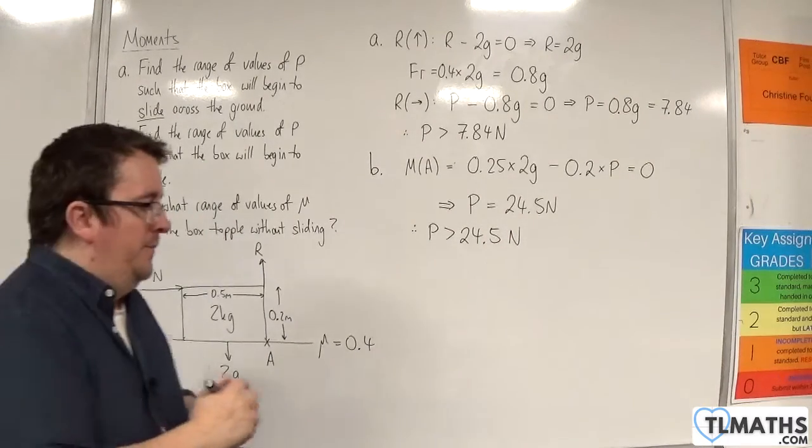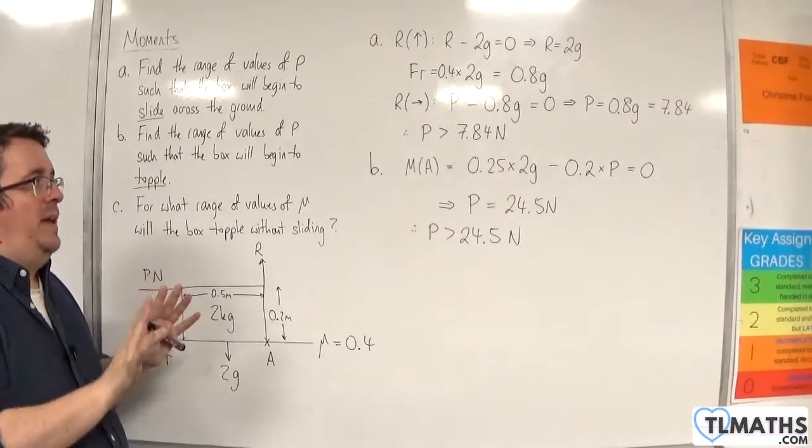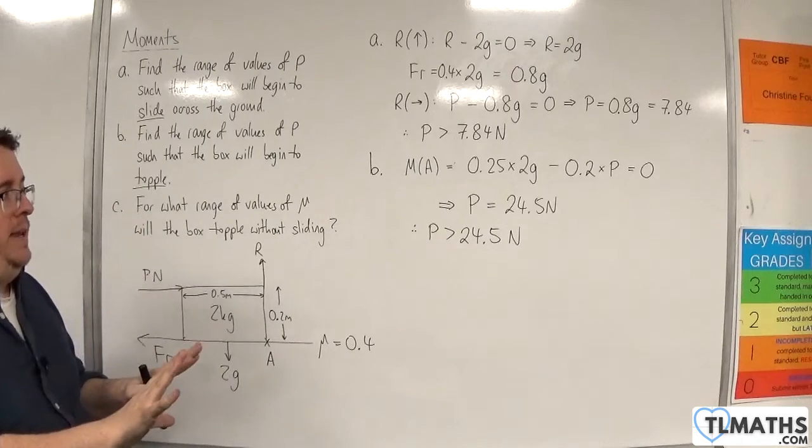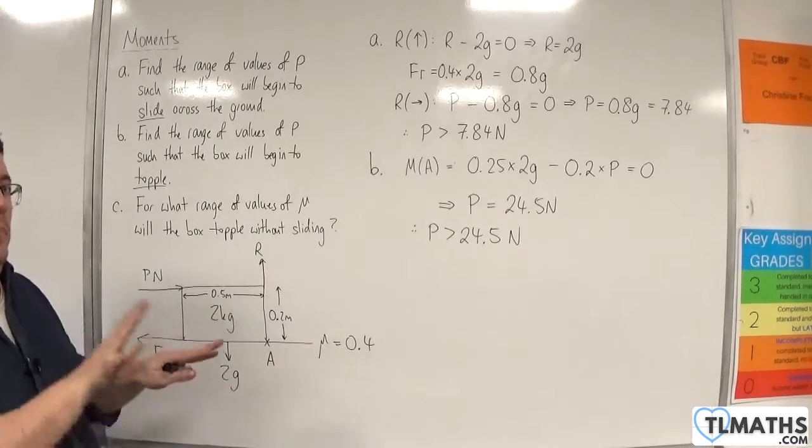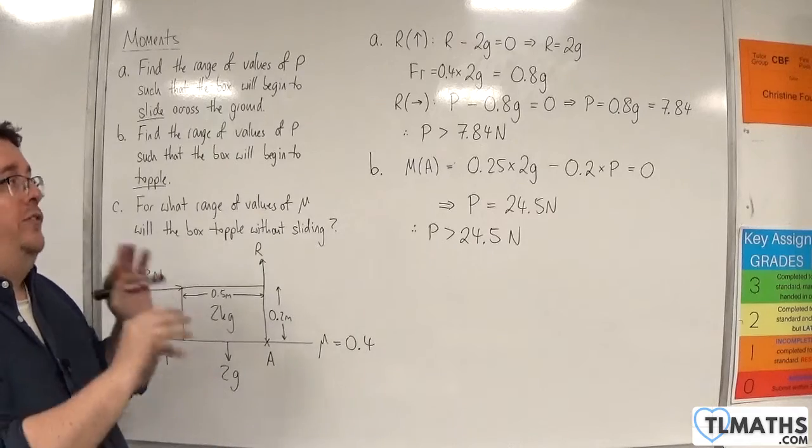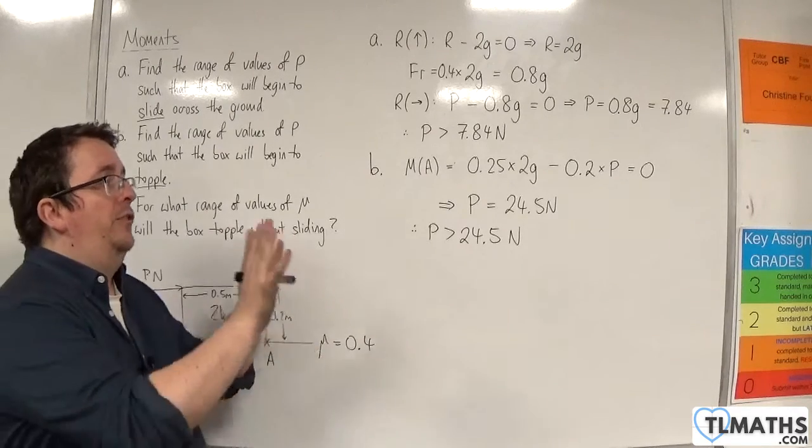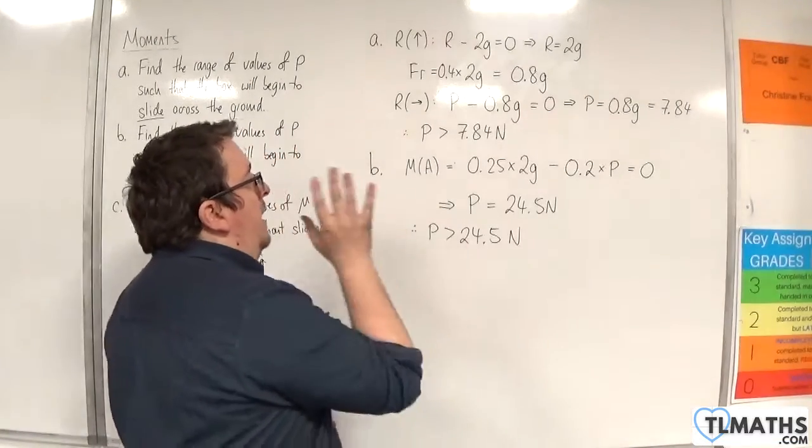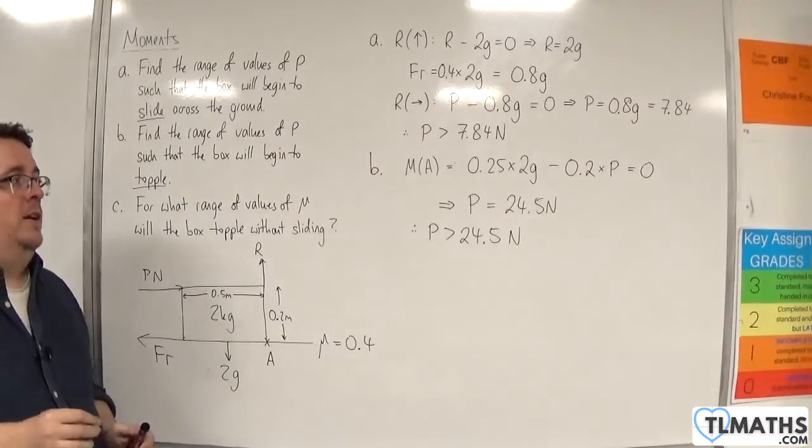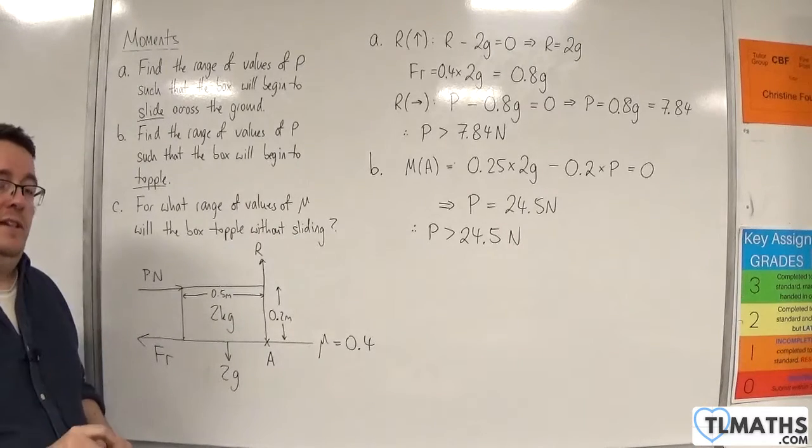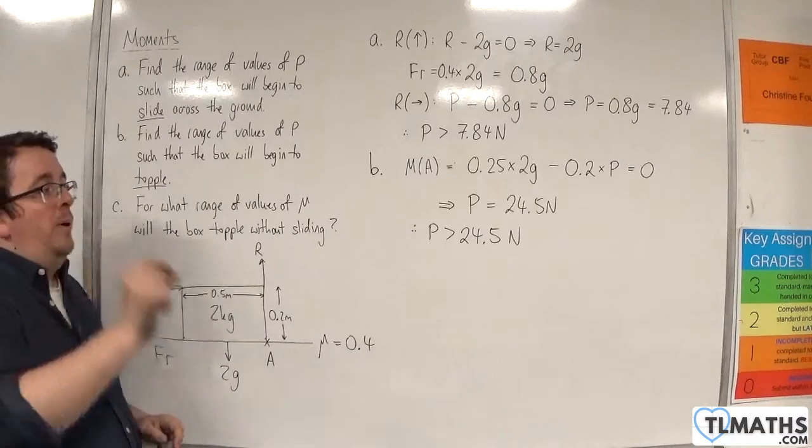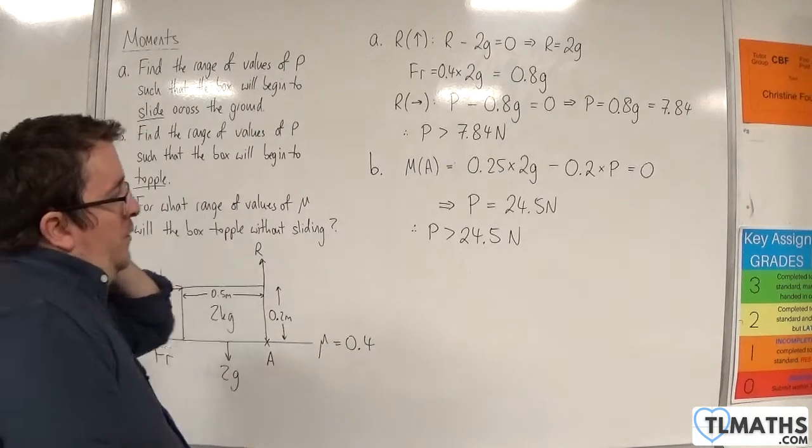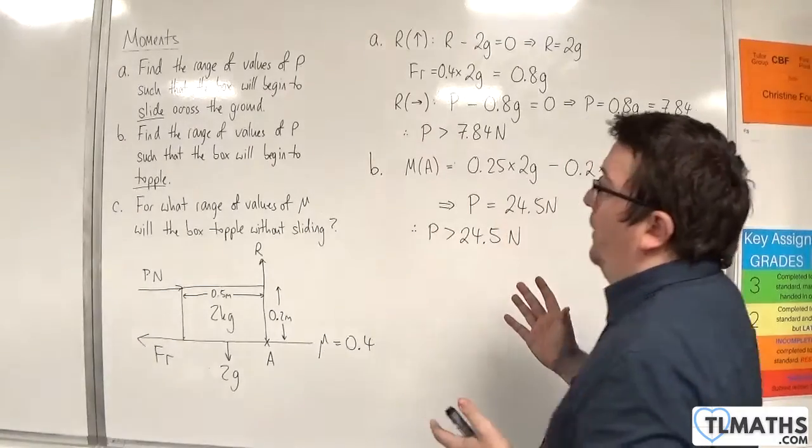What we have is that if you start with p being 0, the box is not moving. As you increase p up to 7.84, the box is on the point of sliding. Once it goes past 7.84, the box begins to slide. If you keep increasing p up to 24.5 newtons, the box is still sliding but is on the point of toppling. When you get past 24.5 newtons, the box topples. That is the scenario that we're seeing here.